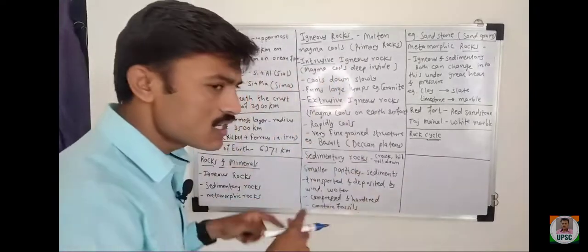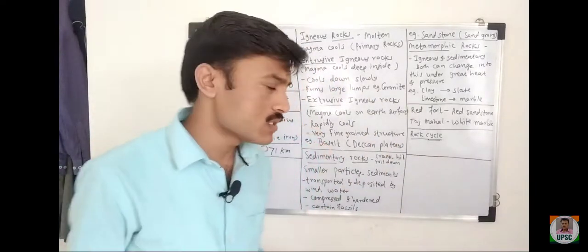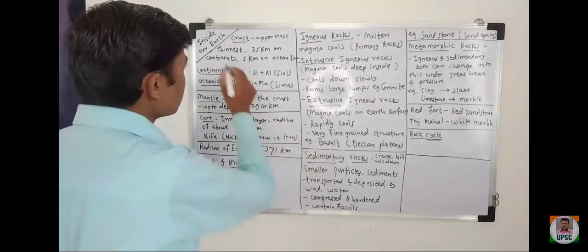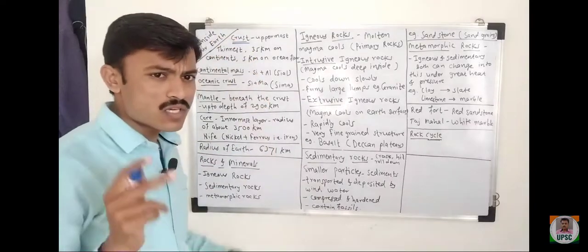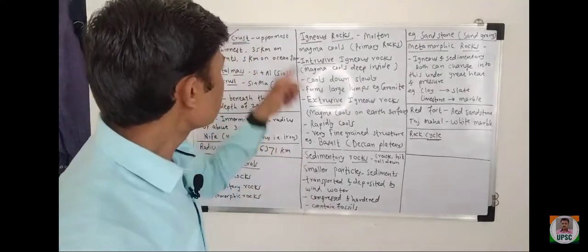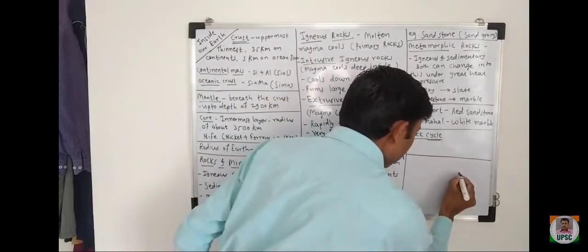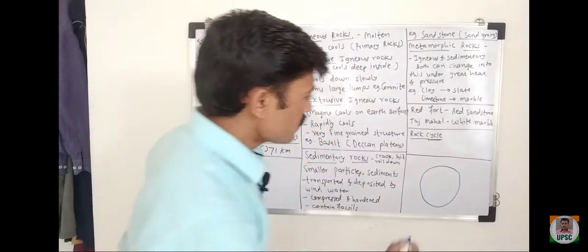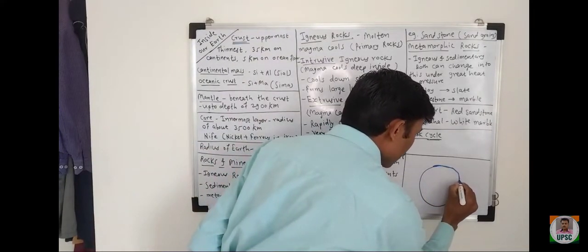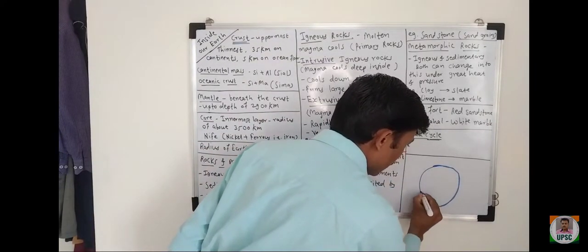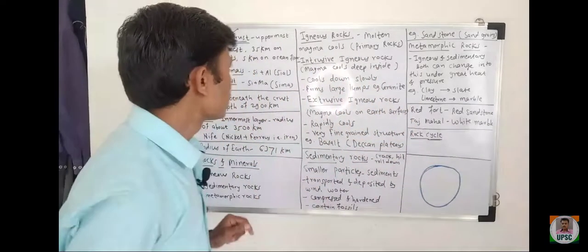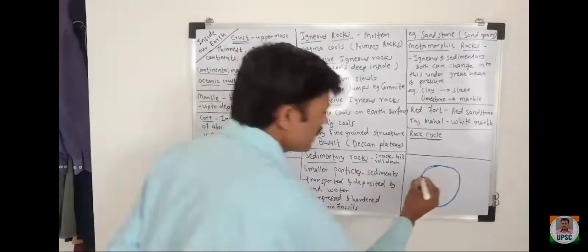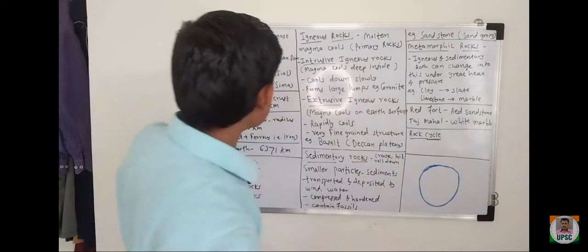These are important. As it is, fact sometimes will not be asked, but it will be useful if you know this basic. So let's start. First concept is crust. What is the definition of crust? Crust - it is the uppermost layer of the earth. Suppose this is the earth, right? So the uppermost layer, this is the crust. Remember this. And this is the thinnest layer, very thin layer.